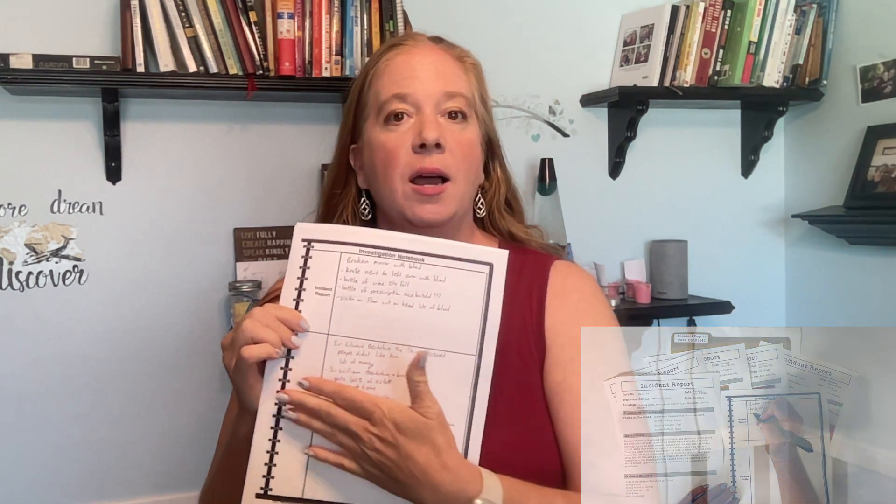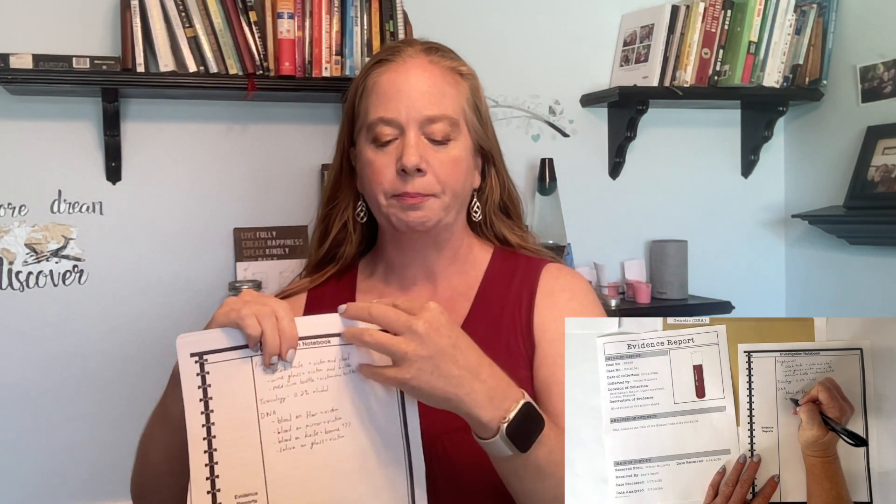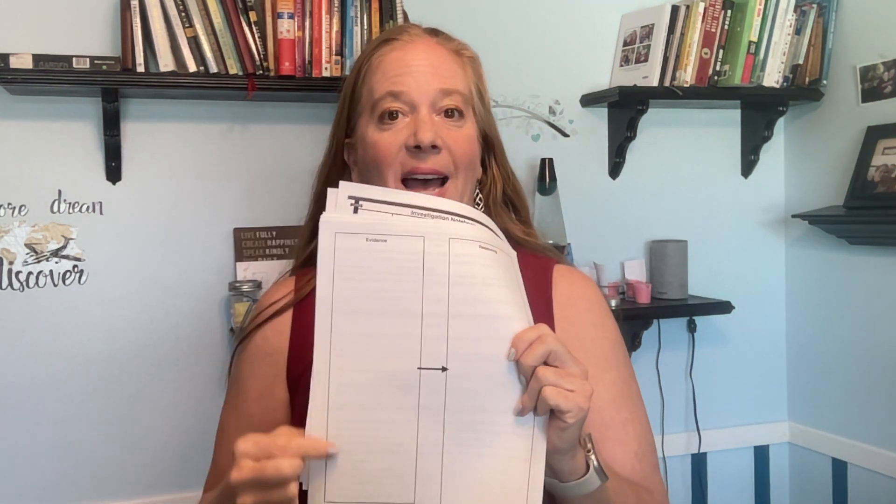During this whole time, students are writing down key information from the incident report, the personal profile report, and the evidence logs. Then they have to decide what actually happened to Sir Edward Berkshire the Third — was it foul play, was it natural causes? They must state their claim: this is what I believe happened to Mr. Edward Berkshire the Third.